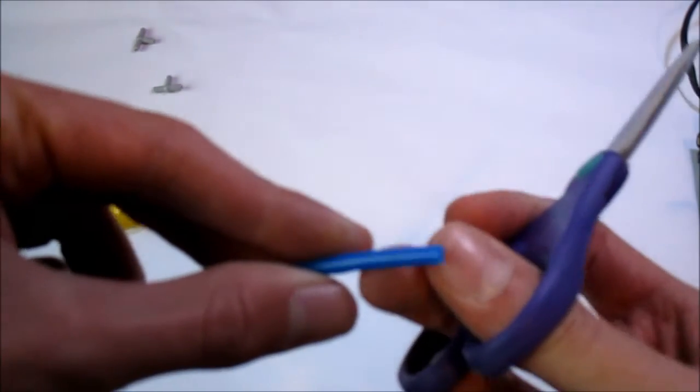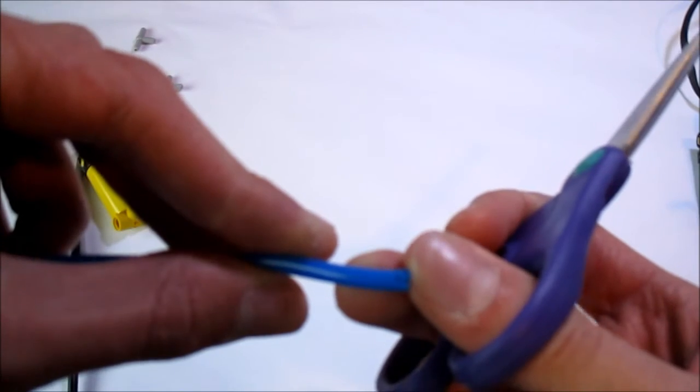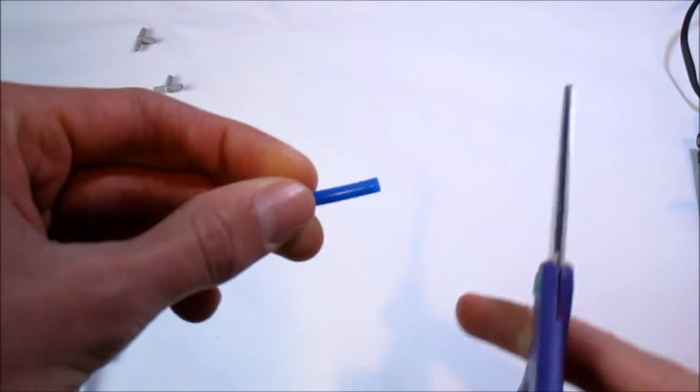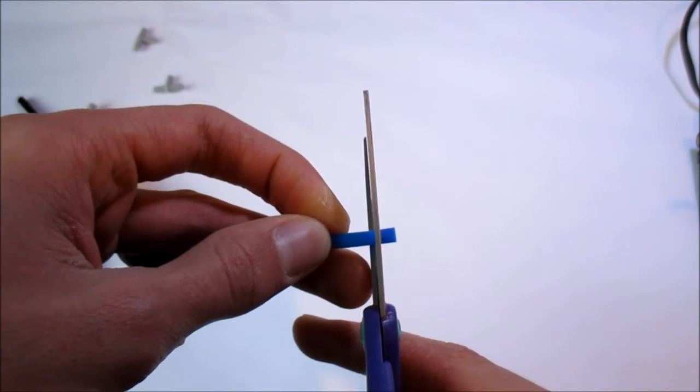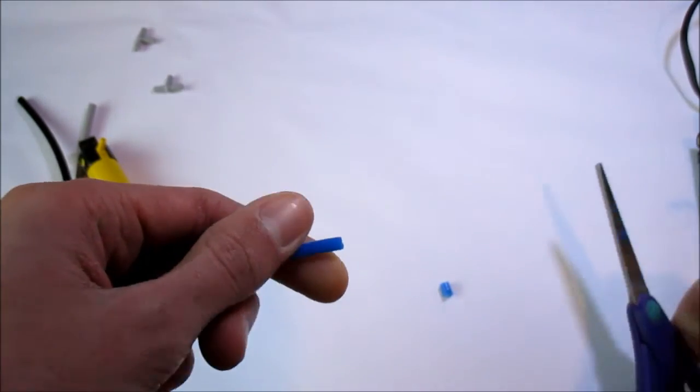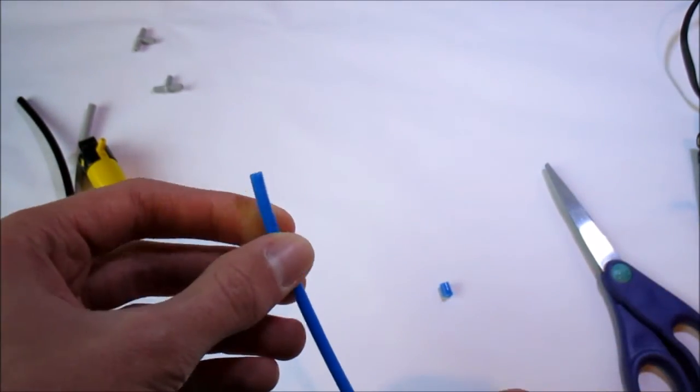One final note when using tubes is that over an extended period of time you're going to notice that the end is going to split, and what to do when this happens is just take your scissors here and go just above the split and you could just cut that split piece off. And now you've solved the problem.